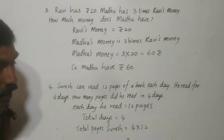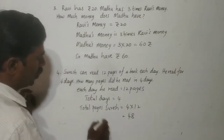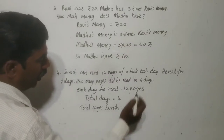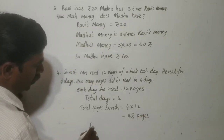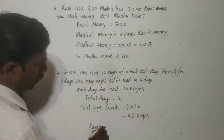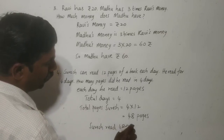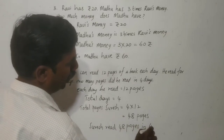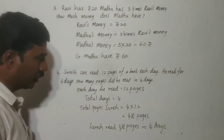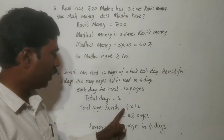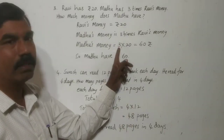That means 4 times 12 equals 48. So, Suresh read 48 pages in 4 days. Okay children, like this you have to do. It is nothing but 4 times. It is 4 times. It is 3 times.